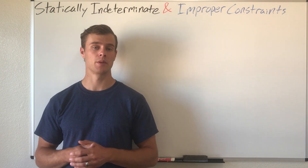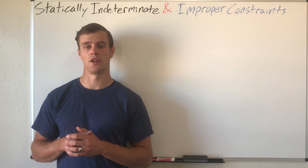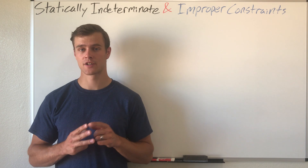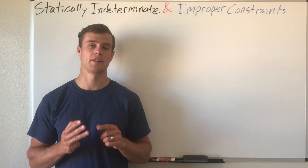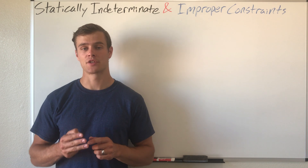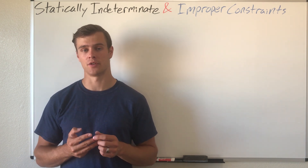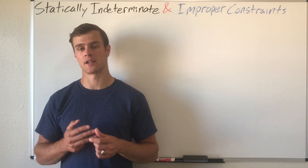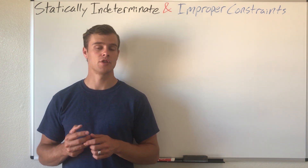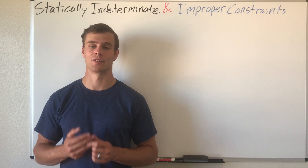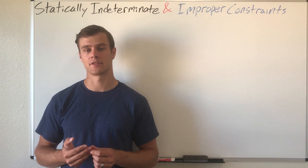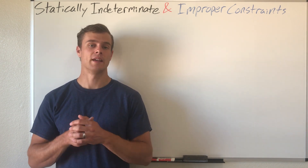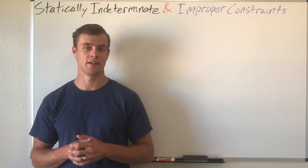In 2D space you have three equilibrium equations that can help you solve for those unknowns: the sum of forces in the x-direction, the sum of forces in the y-direction, and the sum of the moments. If you have more than three unknowns, the object becomes statically indeterminate and you have to use other equations learned later, like in mechanics of materials.